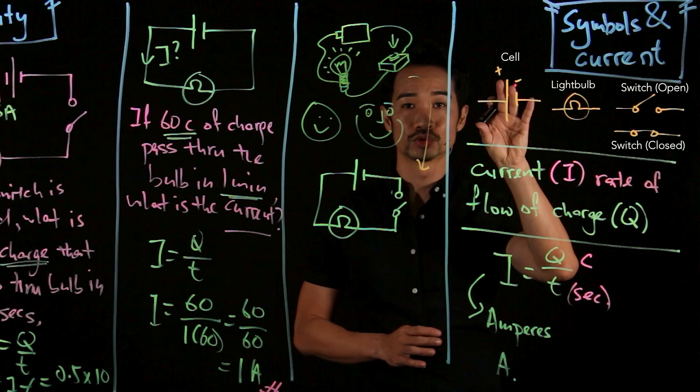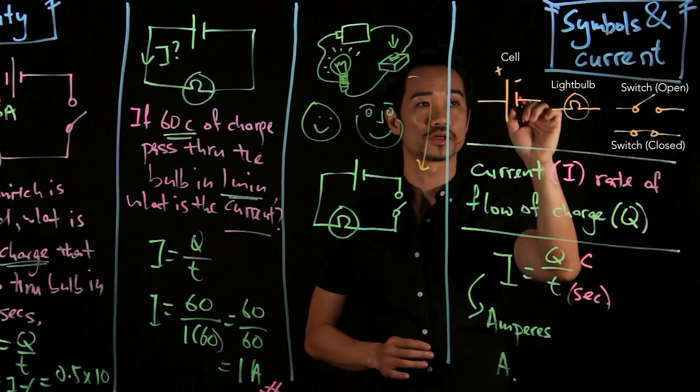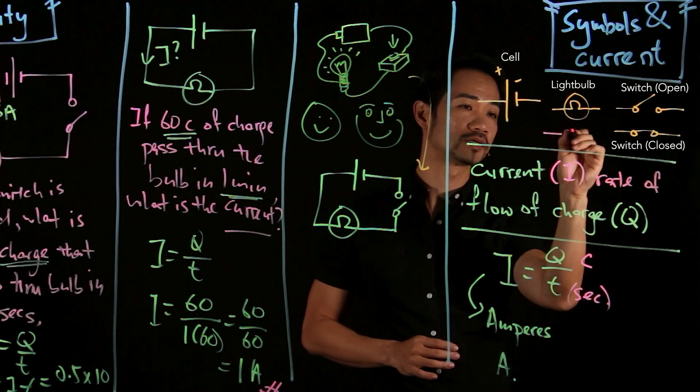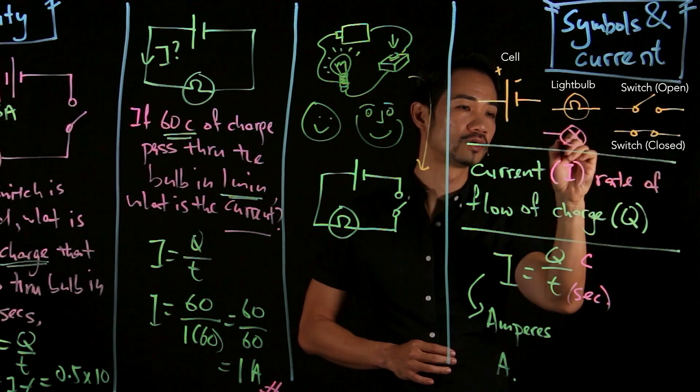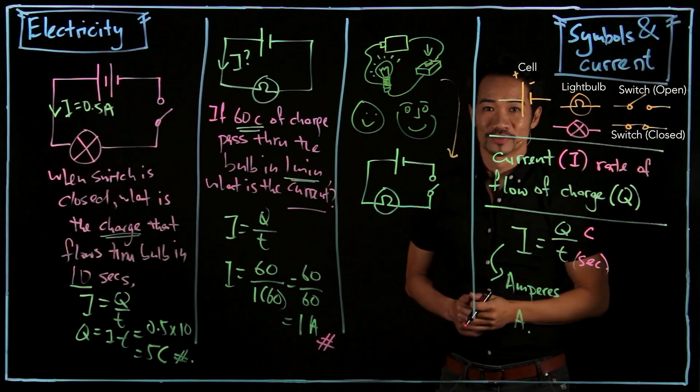And we have learned how to draw common electric symbols, the dry cell. Long line is plus, short line minus, light bulb, and other symbol is the X-Men logo. And then your switch. So hope you get it. See you in the next video. Thank you.